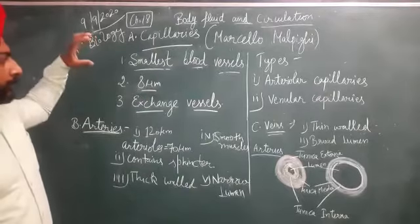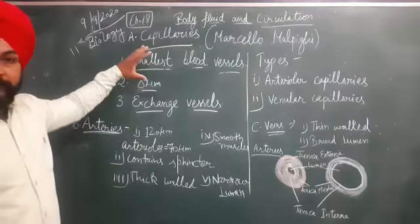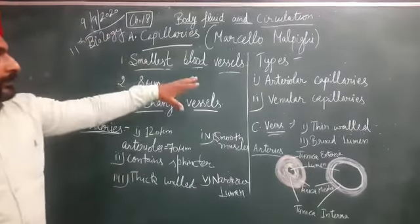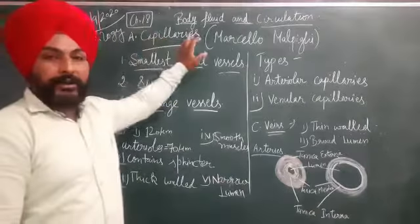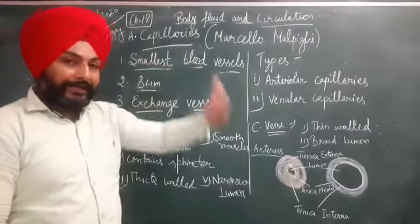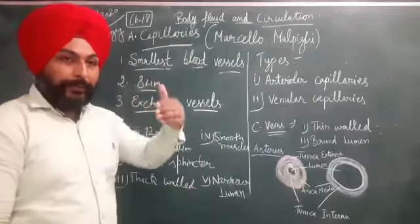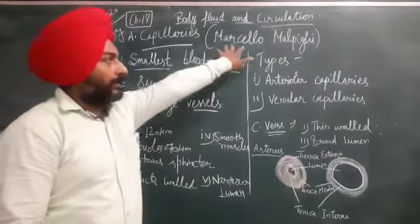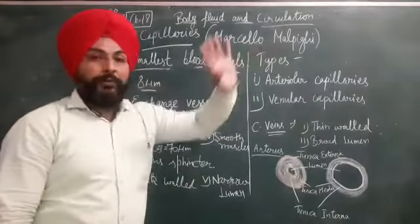Capillaries are the smallest blood vessels. These capillaries were discovered by a scientist named Marcello Malpighi, who gave the name to these blood vessels. These are the narrowest kind of blood vessels, with a diameter of 8 micron units.